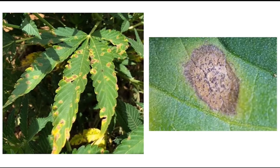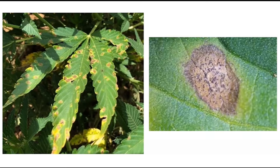To the right here you see a more up-close image of a younger leaf spot forming. You can see that yellow halo is very faint right now, but as this spot continues to grow, that yellow halo will continue to grow in intensity as well.